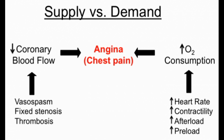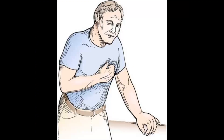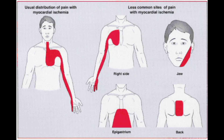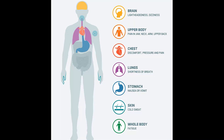The patient presenting with angina describes the discomfort as pressing, squeezing, strangling, constricting, busting, or burning type. It usually builds up in 30 seconds and disappears in 5 to 15 minutes. The intensity of pain ranges from mild to severe. Pain radiates to the neck, left shoulder, and left arm, and rarely to the jaw, teeth, right arm, back, and epigastrium. Clenching of the fist over the sternum while describing the pain is a classical sign.